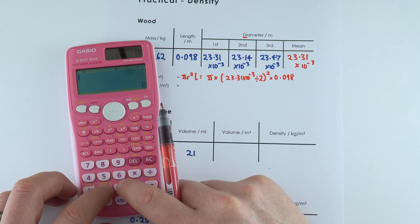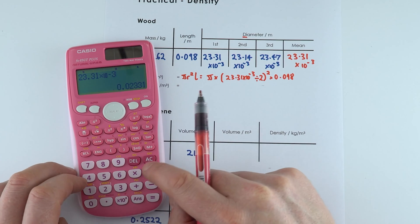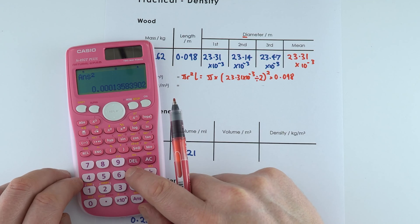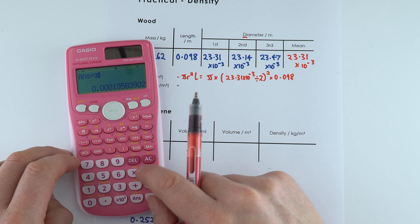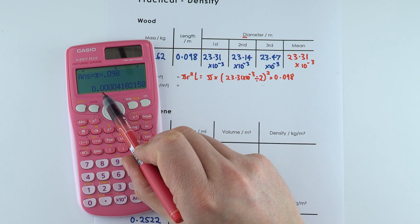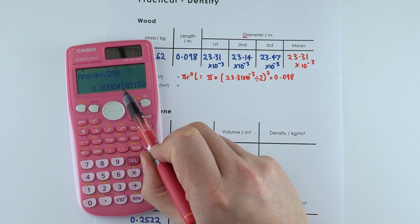So to work this out, we're going to do 23.31 times 10 to the minus 3, we're going to divide that by 2, we're going to square that, and we're going to multiply this value by pi times 0.098, which gives me a value of 0.0000418.